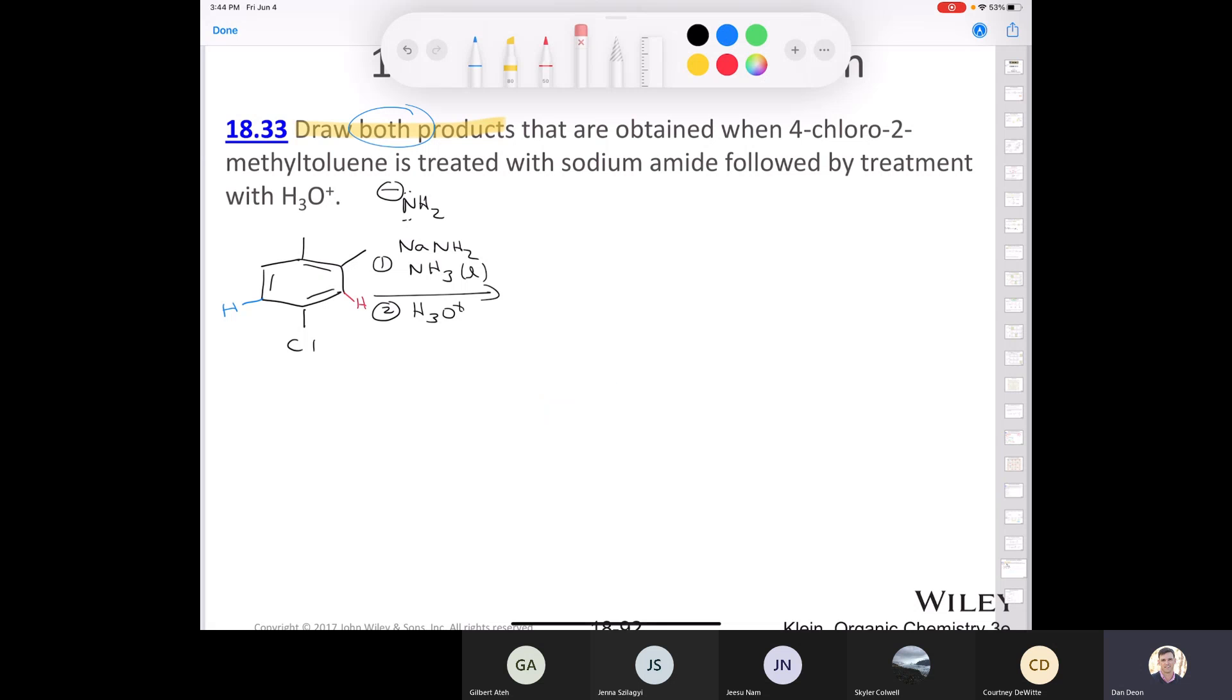So in order to get two regioisomers, to get both products, to get two different products, you've got to pull off the proton in red. So let's draw what that would look like. We're going to pull off this proton, which would give us this guy. So give me a second here to draw it. There we go.